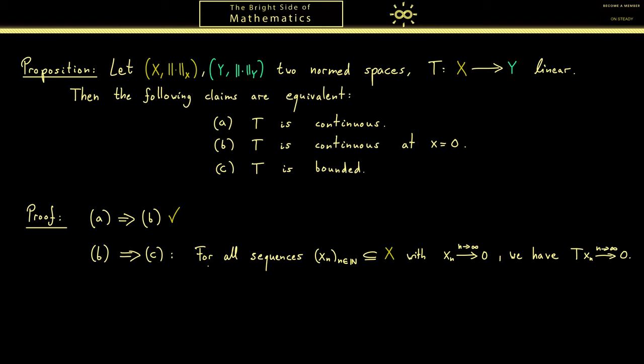So let me write down the claim we need here. The formulation before which we call star now implies there is a δ such that the norm of Tx is always less than 1 for all x with length less than δ.